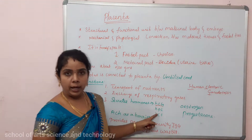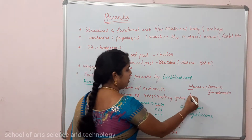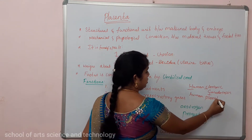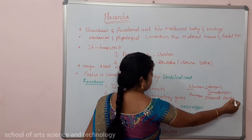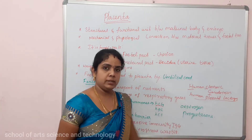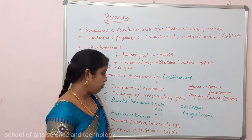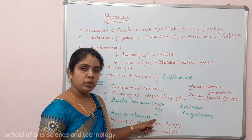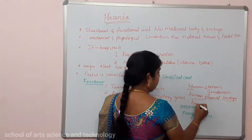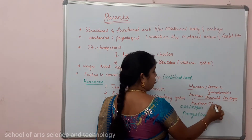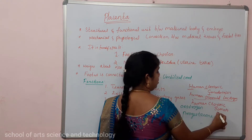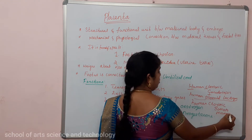The next hormone is HPL — Human Placental Lactogen — which is related to milk production. The placenta also secretes HCS — Human Chorionic Somatomammotrophin.